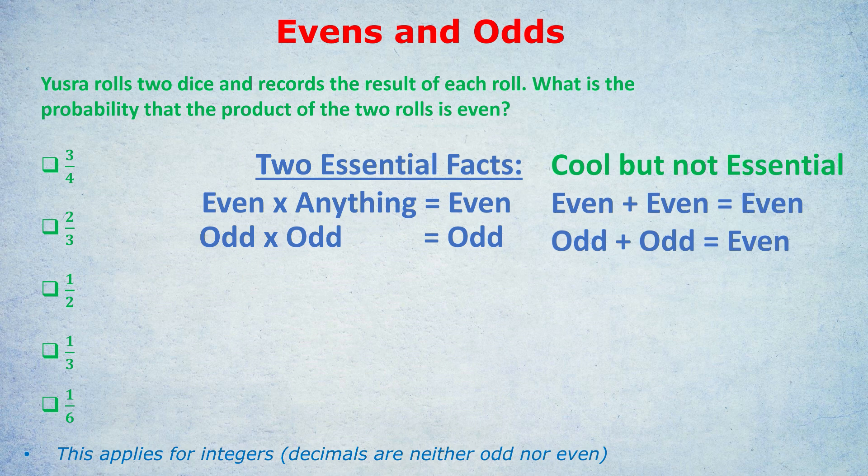If you're going to remember about adding and subtracting: if you add two of the same type together, you always get an even. For example, even plus even is even, or odd plus odd is even. So if you add or subtract two of the same type, you always get an even answer. To get an odd answer, you add or subtract two of different types — for example, an even plus an odd.